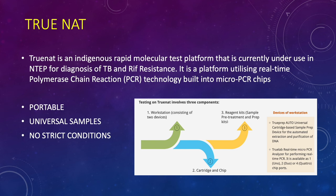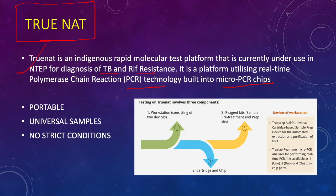Another commonly confused terminology is TrueNAT. Is GeneXpert or CBNAAT the same as TrueNAT? No — they are two different machines from two different companies with a slight difference in technology, though they do essentially the same thing. TrueNAT is also a rapid molecular test platform, but it uses PCR technology built into micro-PCR chips — not cartridges. It also detects TB as well as rifampicin resistance. It is being used in our national TB program. It is portable, doesn't require a big system or proper setup, and can be used for almost all samples — including the two samples excluded by GeneXpert.